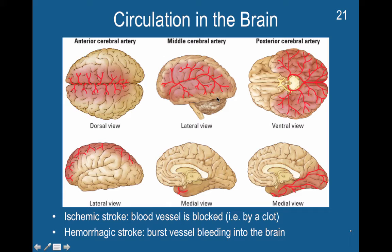Both types are highly problematic. You have a limited amount of space in the brain, so if you have a hemorrhagic stroke, blood leaks into the brain and causes pressure, which can also cause serious problems. The skull can't give, but the brain can, so the blood actually puts pressure on the brain.